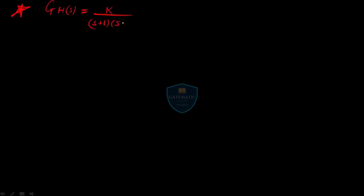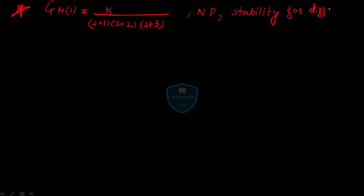The question is: G(s)H(s) = k / [(s+1)(s+2)(s+3)]. In this question you have the k value also. Now the task is to draw the Nyquist plot and find out the stability for different values of k.